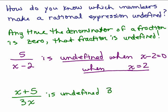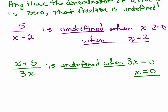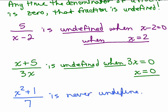The denominator is 3x. So when 3x is equal to 0 — if you divide both sides by 3 — x equals 0. So it's undefined when x equals 0. How about x squared plus 1 over 7? When is this undefined? Can the denominator ever be 0? Well, the denominator is 7 — 7 can never become 0. So x squared plus 1 over 7 is never undefined, which means it is always defined.